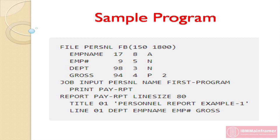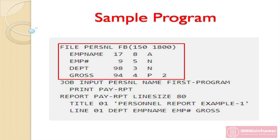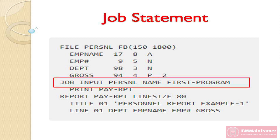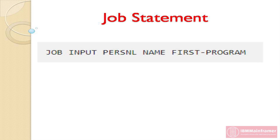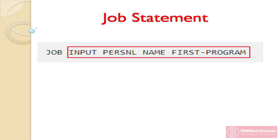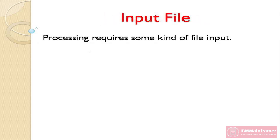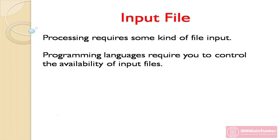The first line after the library section in our sample program is the job statement. A job statement indicates the beginning of processing. The job statement can also automatically provide input, if input is available, to the processing statements that follow it. In our sample statement, the parameters that follow the word job are optional. Typically, processing requires some kind of file input. Most programming languages require you to control the availability of input files.